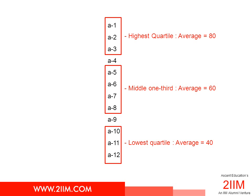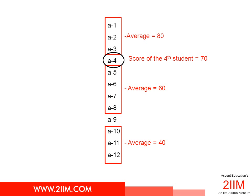The middle one-third average is 60, or the average of A5, A6, A7, A8 is 60. On top of this, we are told that A4 scored 70 — the score of the fourth student is 70. So we know the average of A1 to A3, A5 to A8, A10 to A12, and the fourth student's score which was 70.